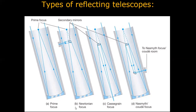In the Newtonian focus, we use two mirrors. One is the curved primary mirror at the bottom, and there is a secondary mirror positioned so that light is directed to a focus point. Light behaving as if coming from the focal point hits the secondary mirror and gets reflected back to the eyepiece.